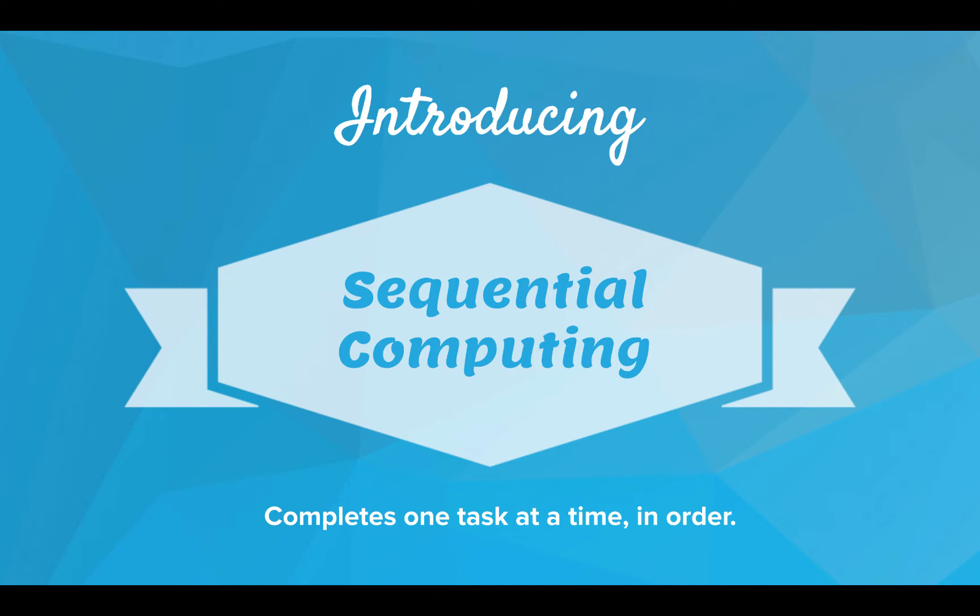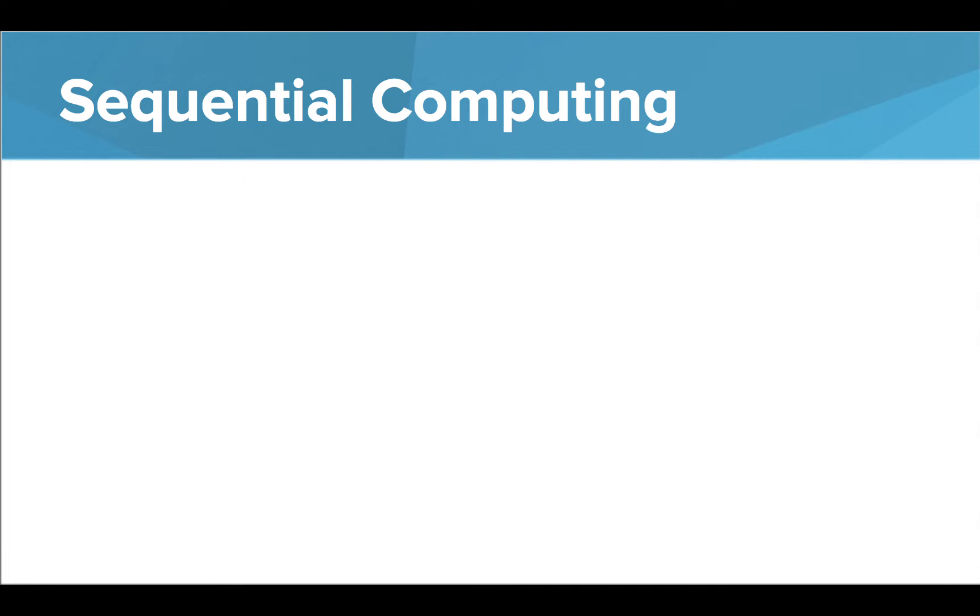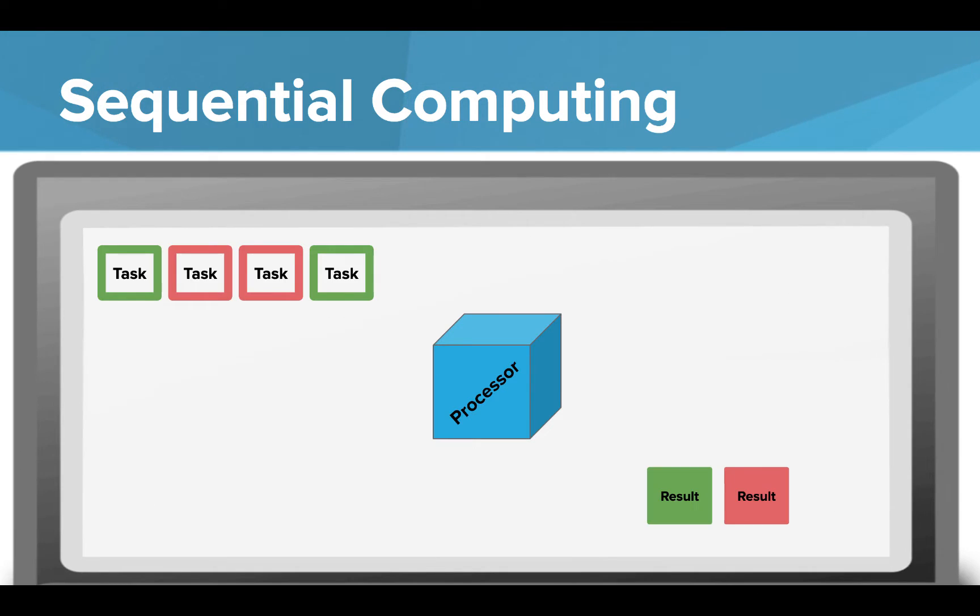First, let's see how sequential computing works. Sequential computing completes one task at a time in order. So let's zoom into your computer to see exactly what goes on. Let's say a computer has four tasks to carry out. If sequential computing is used, it'll take one task at a time and put it through the processor.